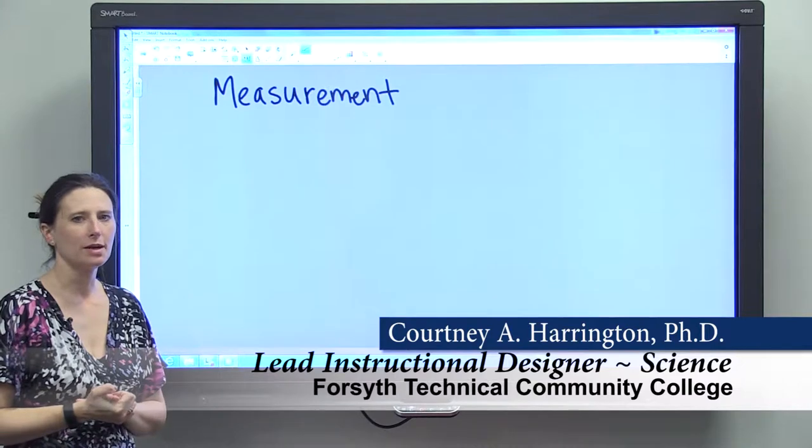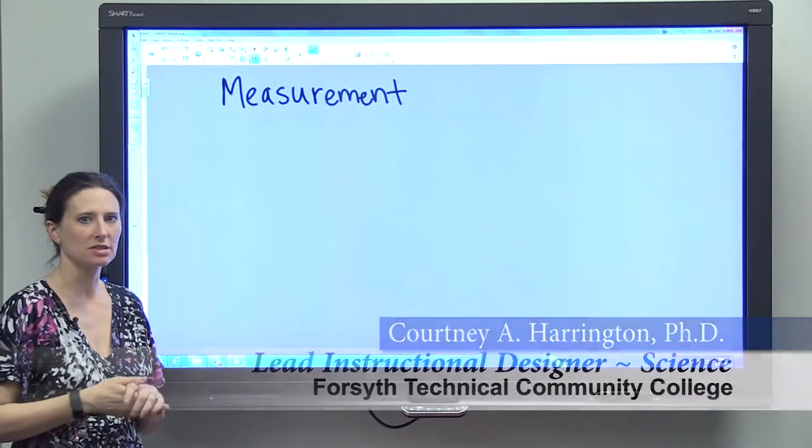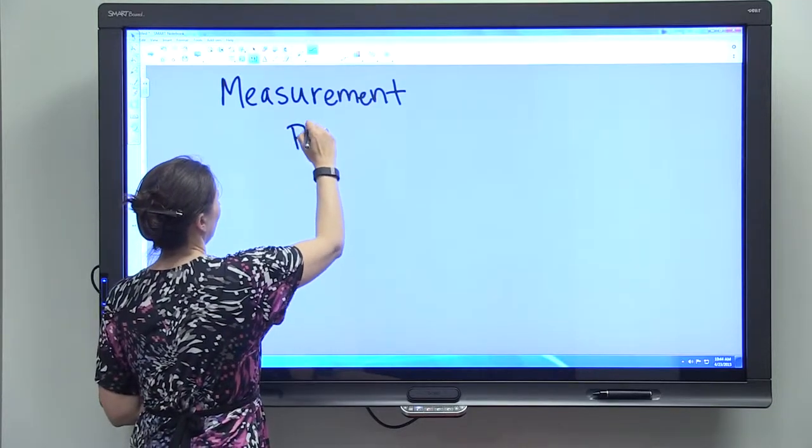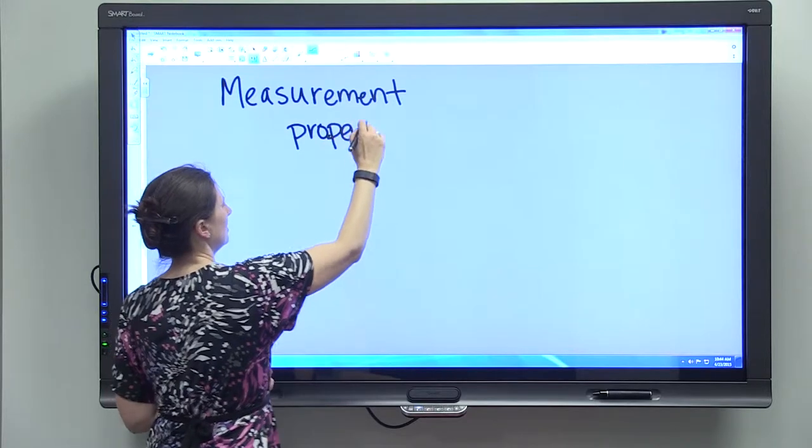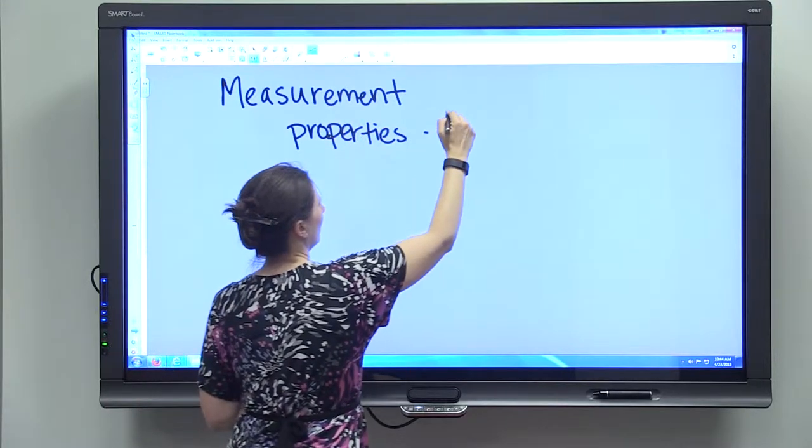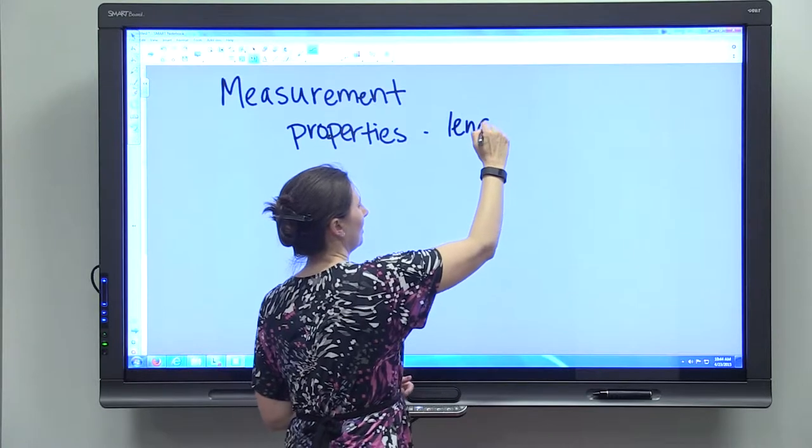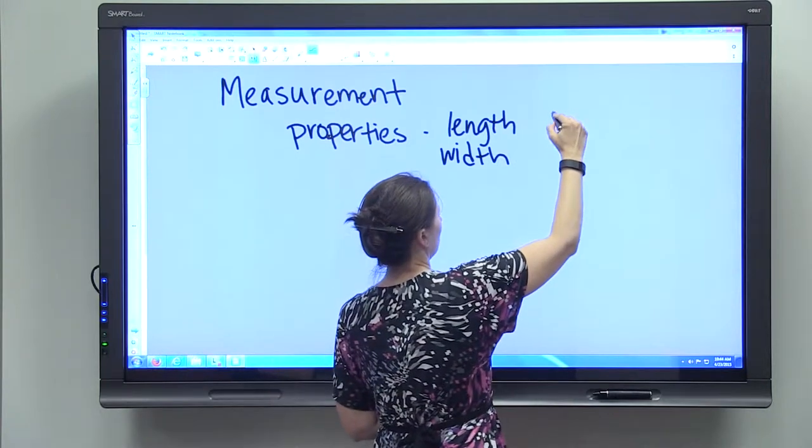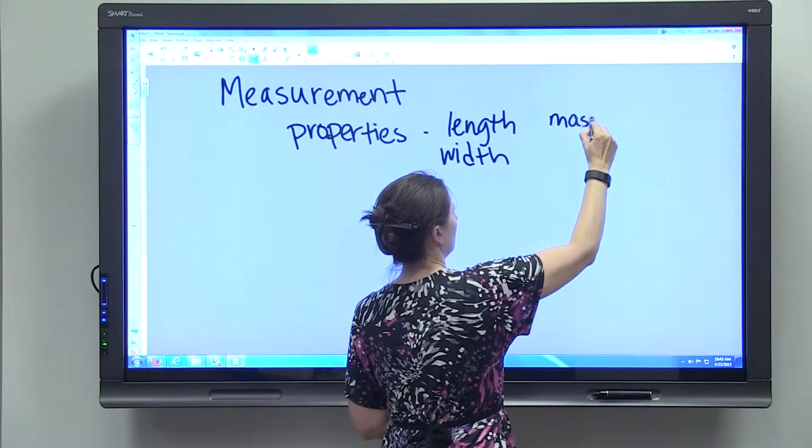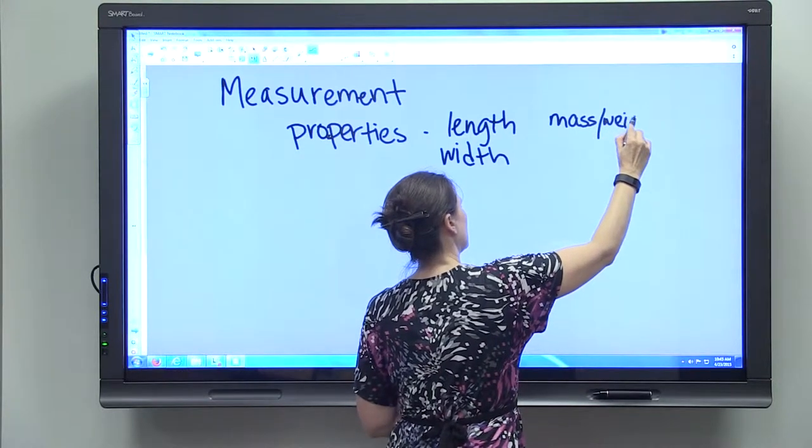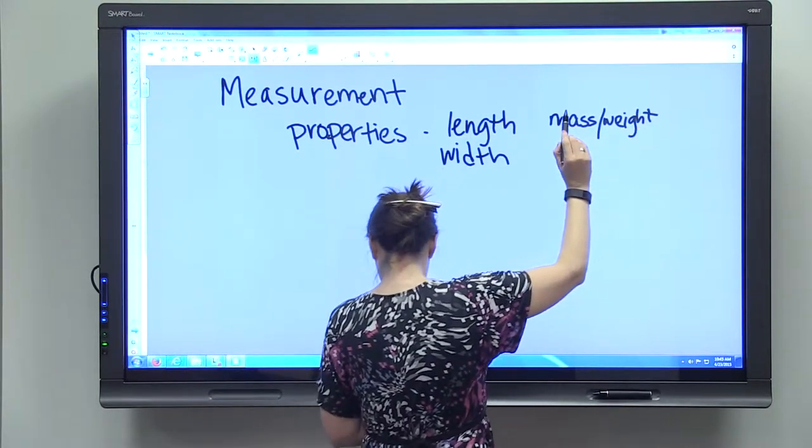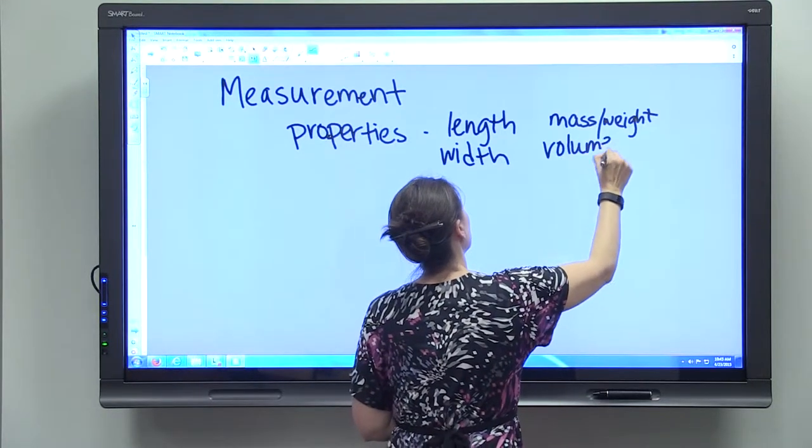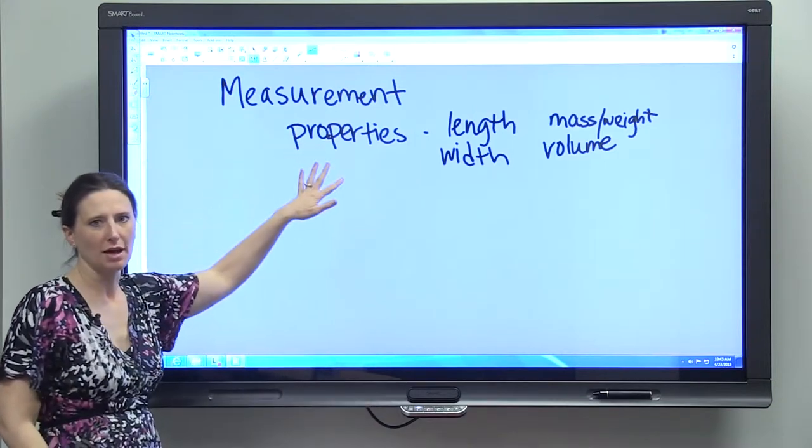Okay, we're going to talk a little bit about measurement and systems of measurement today. Measurement really tells us about the properties of something, so it can tell us about length, about width, tell us about mass or weight, and it can tell us about volume.